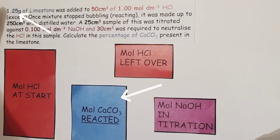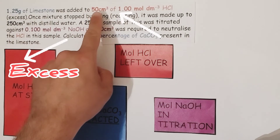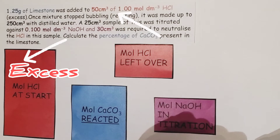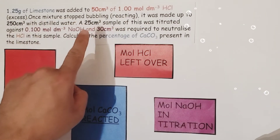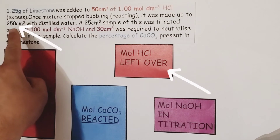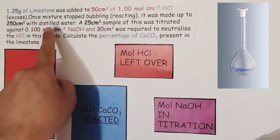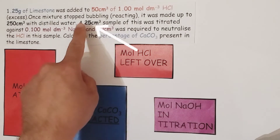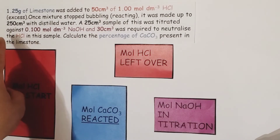We're told that 1.25 grams of limestone, which is mainly calcium carbonate, was allowed to react with an excess of hydrochloric acid — that's 50 centimetres cubed of one molar hydrochloric acid. Once the mixture had stopped bubbling and reacting, the leftover hydrochloric acid was then diluted up to a volume of 250 centimetres cubed in a volumetric flask.